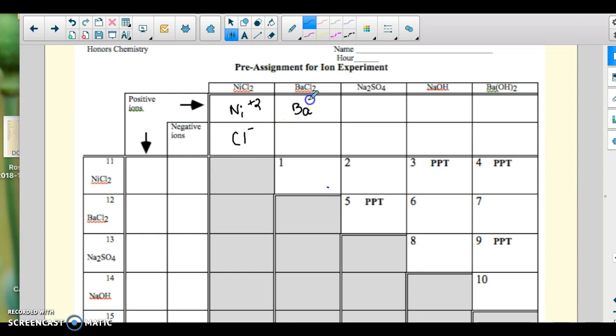So notice that I'm not bringing the subscript with for the chloride. Here I'm not bringing that subscript with the sodium. But I am going to bring it with here because that's sulfate, and that's a polyatomic ion. So I don't want to change the subscript with polyatomic ions.